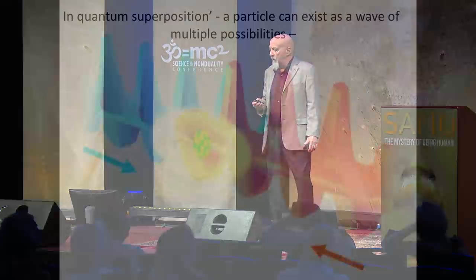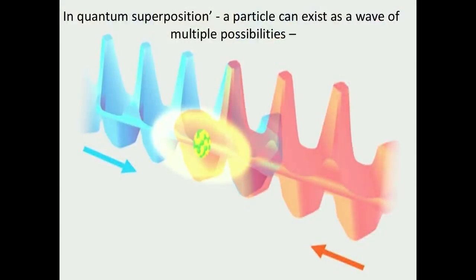Now, for example, in quantum superposition, a particle, this happens to be a cesium atom in the yellow in front of us, can exist as a wave of multiple possibilities, as you see in the background, the blue and the red. Or it can act as a particle. And the problem is that the particle is in a definite state and location.